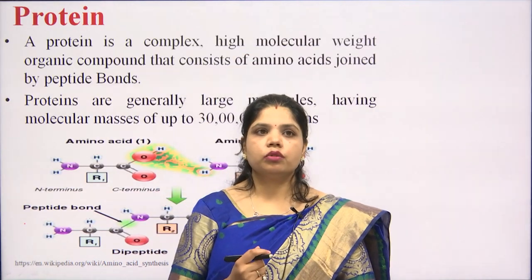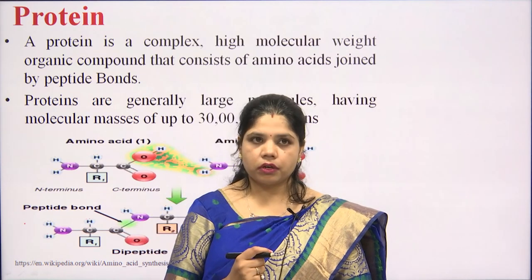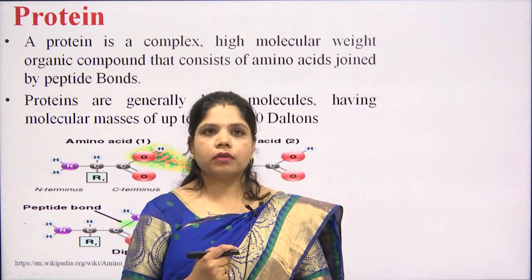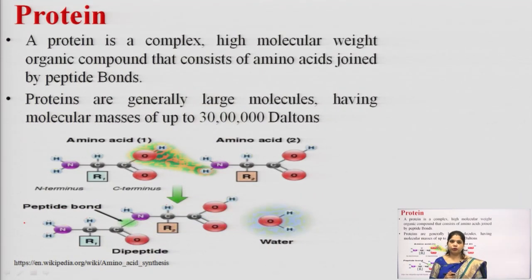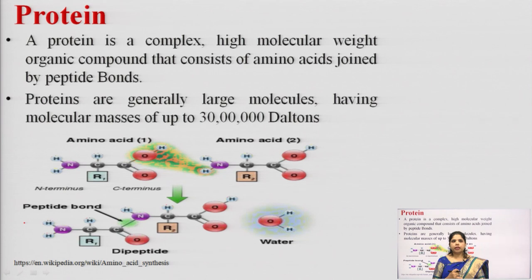What are proteins? Proteins are complex, high molecular weight organic compounds that consist of amino acids joined by peptide bonds. We can see that proteins are high molecular weight compounds, and their molecular weight is up to 30 lakh daltons — these are very large molecules.